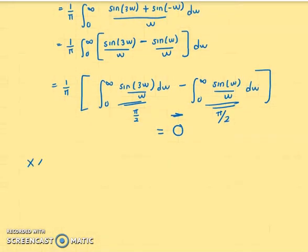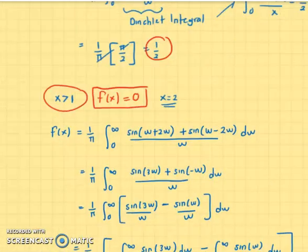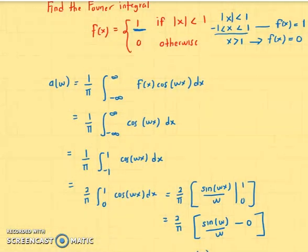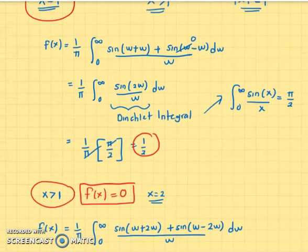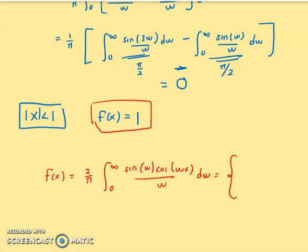For x < 1 (i.e., |x| < 1), f(x) = 1, as given by the original condition. To summarize, f(x) = (2/π) ∫_{0}^{∞} [sin(ω) cos(ωx) / ω] dω equals 1 for |x| < 1, equals 1/2 for x = 1, and equals 0 for x > 1.